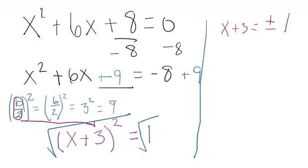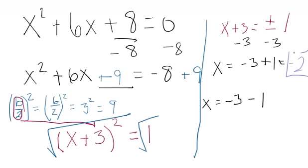My final step is just getting x by itself, so I subtract 3 from both sides. This is going to leave me with x equals negative 3 plus 1, and x equals negative 3 minus 1. So this is going to turn out to be negative 2 and this is going to give me negative 4.